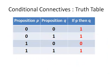Here is the truth table for P implies Q, or 'if P then Q': 1, 1, 0, 1. That is the truth table for that. This ends our presentation. Thank you.